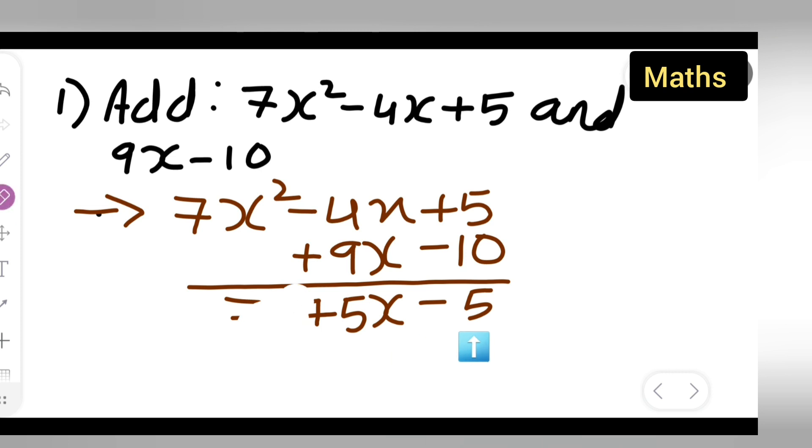Write this properly. I will have to write this properly. This is nothing but 7x square, this will be plus positive sign. So this is 7x square plus 5x minus 5 is the answer.